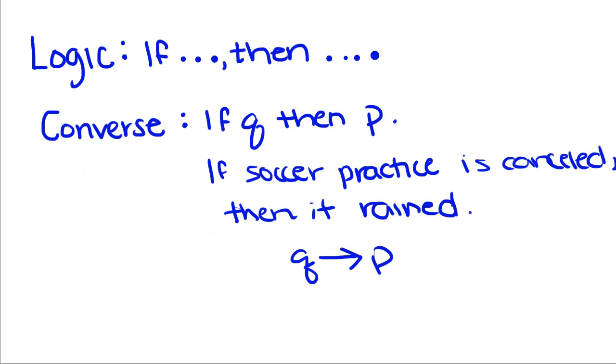One of those is called the converse, where you take the two statements and you flip them. So if Q then P. So if soccer practice is canceled, then it rained, where instead of P implying Q, you have Q implies P.